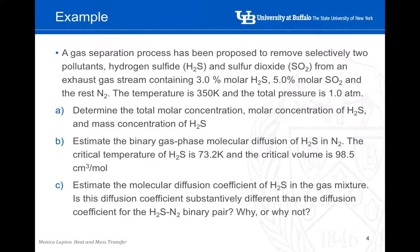So this is the example. A gas separation process has been proposed to remove selectively two pollutants: hydrogen sulfide (H₂S) and sulfur dioxide (SO₂), from an exhaust gas stream containing 3% molar hydrogen sulfide and 5% molar sulfur dioxide, with the rest being nitrogen. The temperature is 350 Kelvin and the total pressure is 1 atm. We need to calculate the total molar concentration, the molar concentration of hydrogen sulfide, and the mass concentration of hydrogen sulfide.